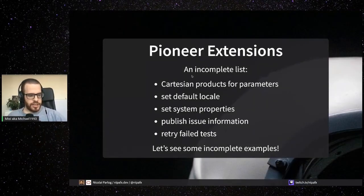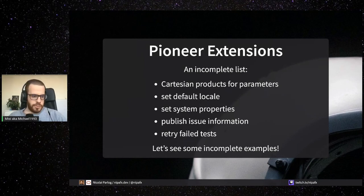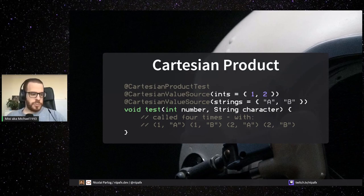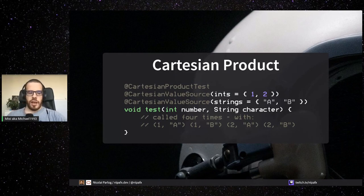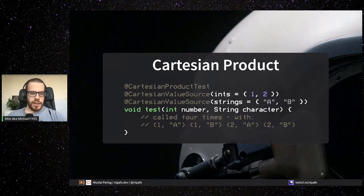Nikolai just said he showed you one of our extensions — unfortunately, we don't actually have the 'disable on Friday' extension, which is a shame. But we have a lot of other things. The first one is the Cartesian Product Test. JUnit 5 has the concept of a parameterized test — a test that has parameters, because sometimes you want to run the same test against different inputs. With parameterized tests you specify all parameters, but sometimes you just want to specify the possible inputs and check against all possible combinations. That's what Cartesian Product Test does.